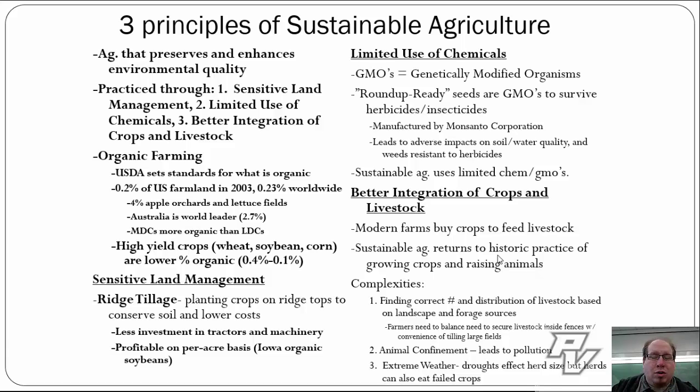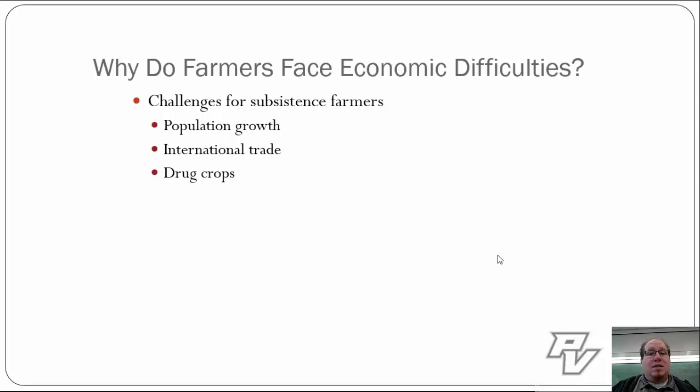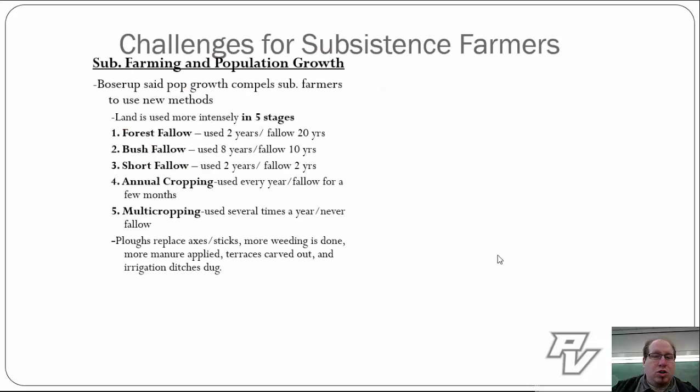Those are the challenges that commercial farmers face. Now, subsistence farmers really face three other issues. We've talked about population growth at length in this course. International trade isn't always the best for subsistence farmers, and we're going to go into more detail today about drug crops — another form of cash crop that might exist on the plantation agriculture system in some LDCs and subsistence situations.